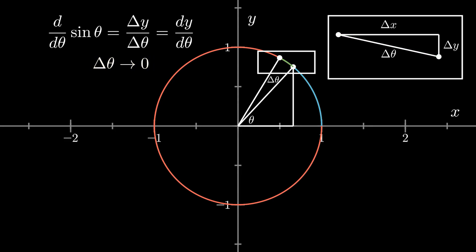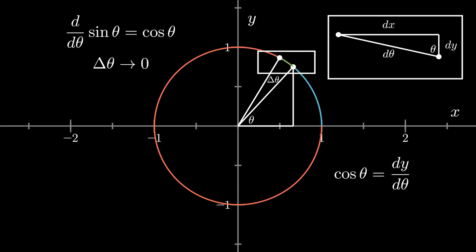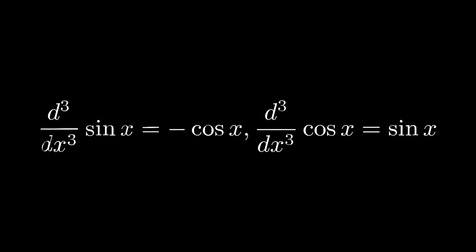As delta theta approaches zero, the arc essentially becomes a straight line, and the shape becomes a right triangle similar to the original on the unit circle, with the angle approaching theta. Since cosine theta is adjacent over hypotenuse, and the adjacent and hypotenuse sides approach dy/d theta, cosine theta is the derivative of sine theta. Similarly, negative sine theta is the derivative of cosine theta. This differential relationship means higher-order derivatives of sine and cosine cycle through: sine x, cosine x, negative sine x, and negative cosine x.